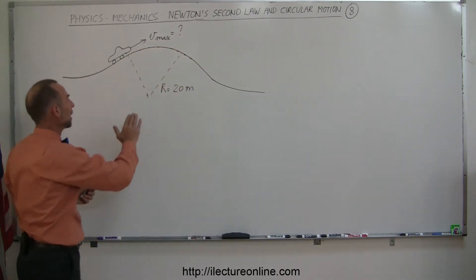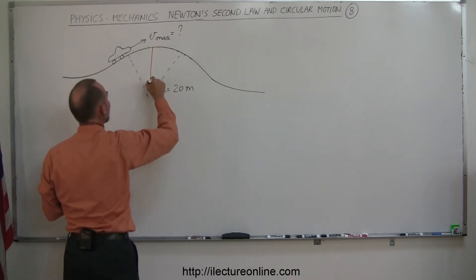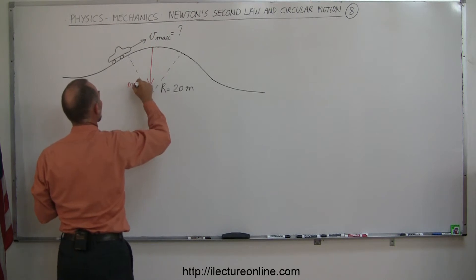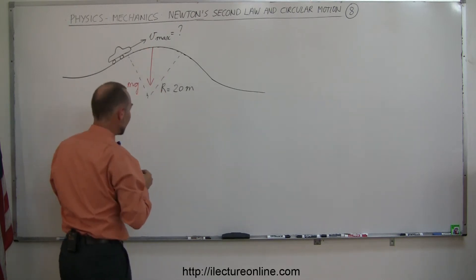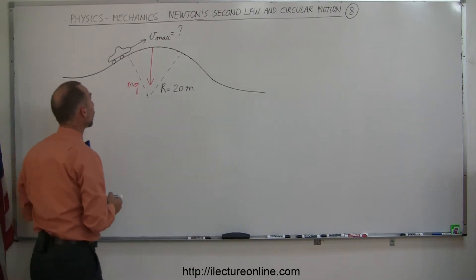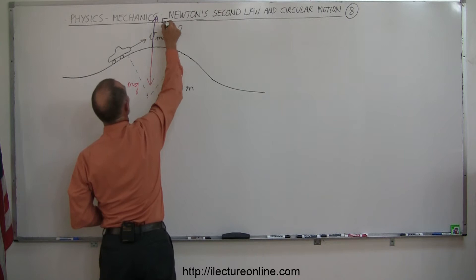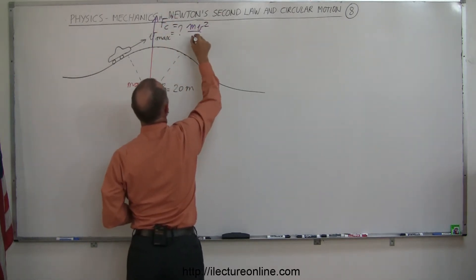If we imagine that this dune buggy gets to the top of the hill at a certain speed, we then would have the weight caused by gravity acting downward. And because it's going around in a circle path, we have that fictitious force which we call the centrifugal force pushing upward, F centrifugal, like that. This is equal to mv squared over r.